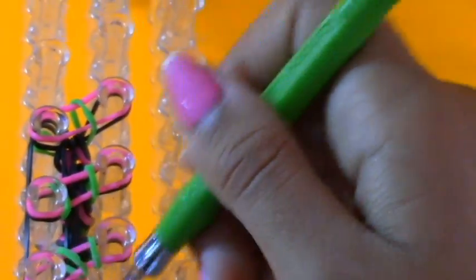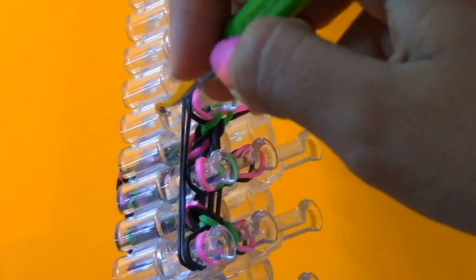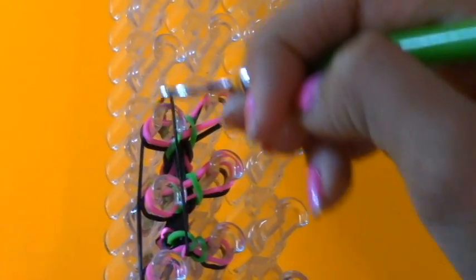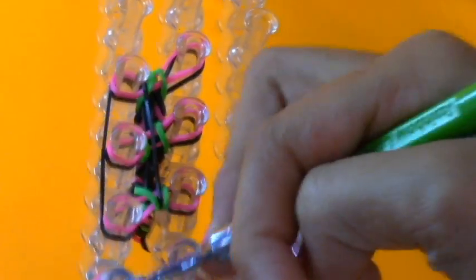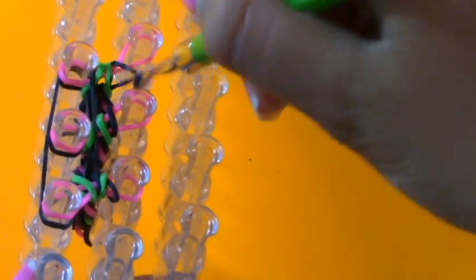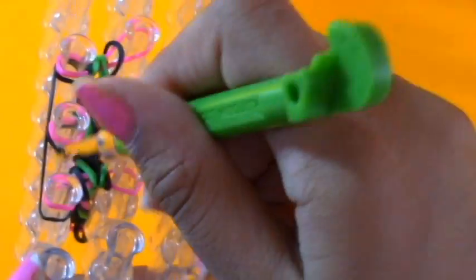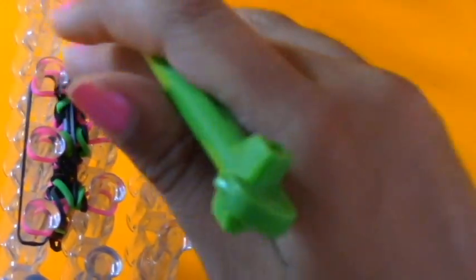Now there are only two rows of bands instead of three. Do exactly what you would do normally when hooking: pull the bottom vertical band up and over, take the bottom band on the right side pegs and pull that band up and over the rest, and then go inside the vertical bands on the left side and take the bottom rubber band and pull it up and over.